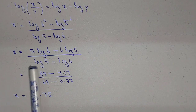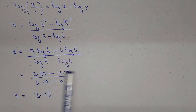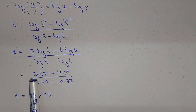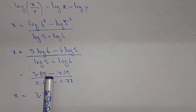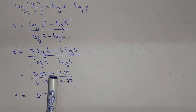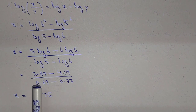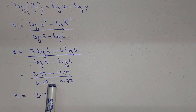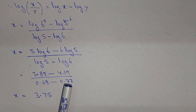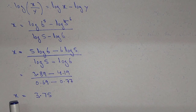Finding these values from a calculator: (3.89 − 4.19) / (0.69 − 0.77), so the value of x is approximately 3.75.